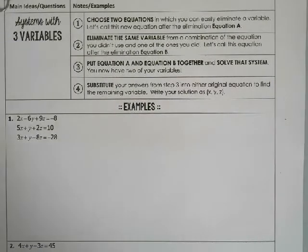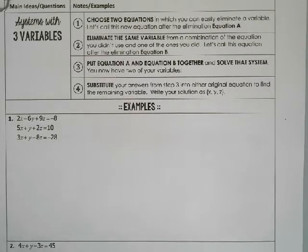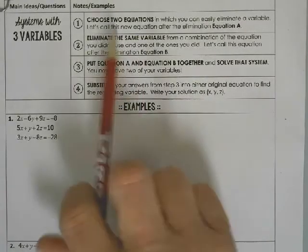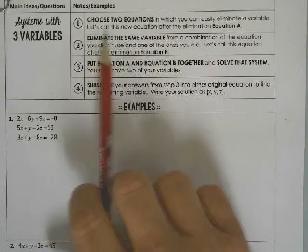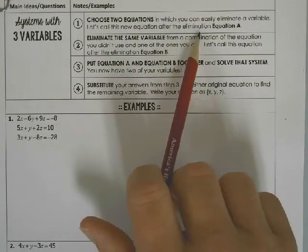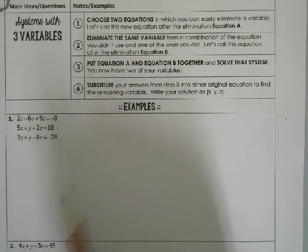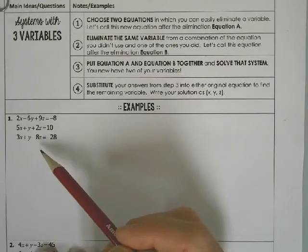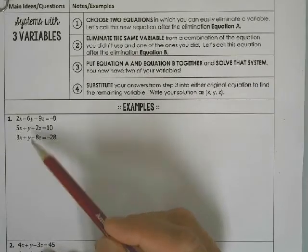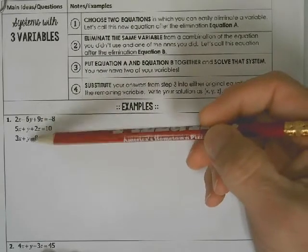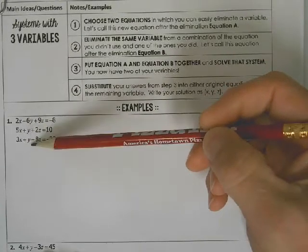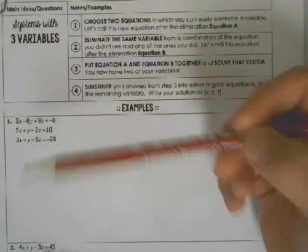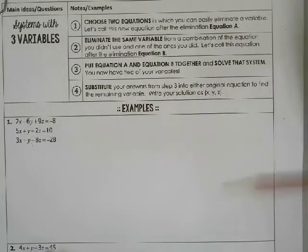Good morning. I want to warn you right off that these are kind of long problems. We're solving systems with three variables. I've got the process here that you should take notes on and write down. Number one, we want to choose two equations in which you can easily eliminate a variable. Let's call this new equation after the elimination equation A. You look at your three equations and find two that have probably similar coefficients that you can easily multiply and eliminate one, like we did in the last lesson before the quiz.